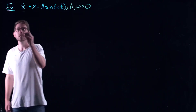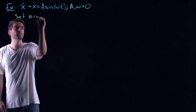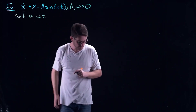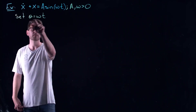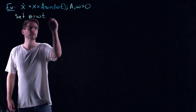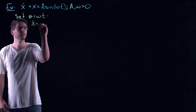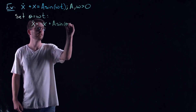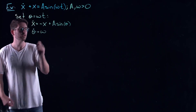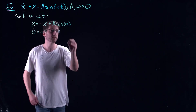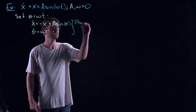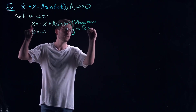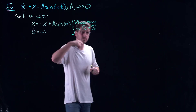I want to set θ = ωt — this is a periodic driving, and I'm going to use a phase variable to think about this in terms of a planar system: ẋ = −x + a·sin(θ) and θ̇ = ω. The phase space is R × S1 — x can take any value in R and θ lives on the circle S1. This is the same phase space as the pendulum — a cylinder.